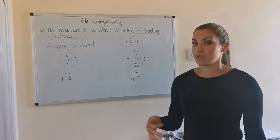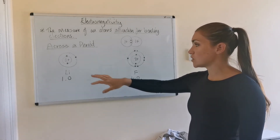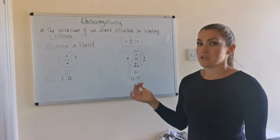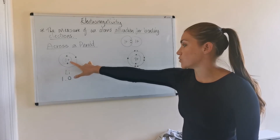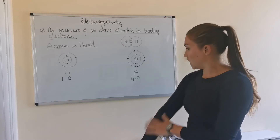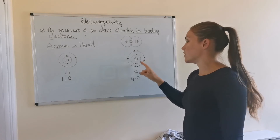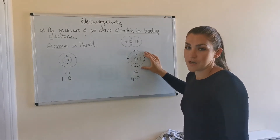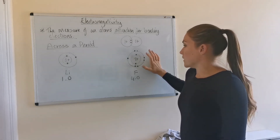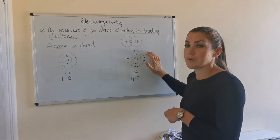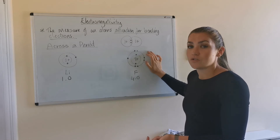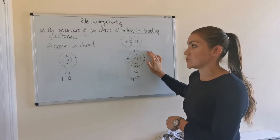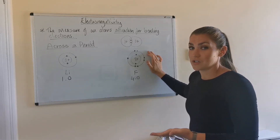So why is this? Going across the period, there is an increasing nuclear charge. Across the period, there's the same number of occupied energy levels, so the outer electrons are roughly the same distance from the nucleus. But lithium has a 3+ nuclear charge whereas fluorine has a 9+ nuclear charge, so fluorine's nuclear charge is greater. That gives it a greater attraction for any bonding electrons, as well as its own outer electrons. This is why we see a decrease in covalent radius, an increase in ionization energy, and an increase in electronegativity across the period — because of the increasing nuclear charge and therefore greater attraction for bonding electrons.